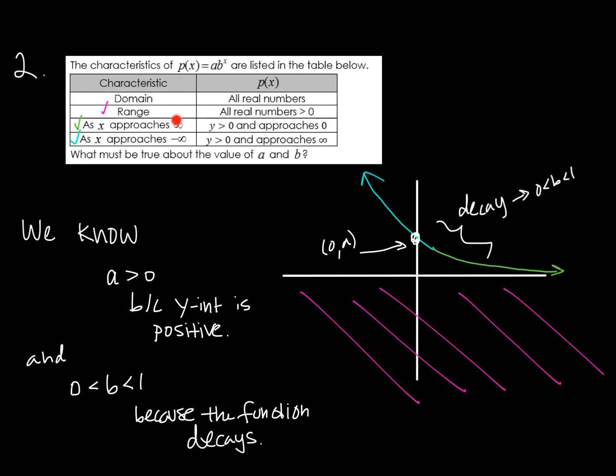As x approaches infinity, it's my right-end behavior. The y values are approaching zero, like that. And as x approaches negative infinity, the y values are approaching positive infinity. So I've graphed it like this.